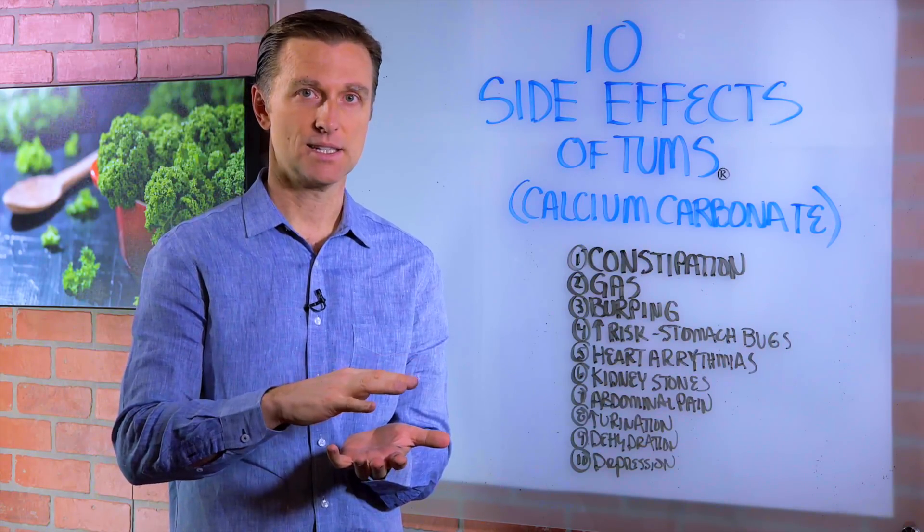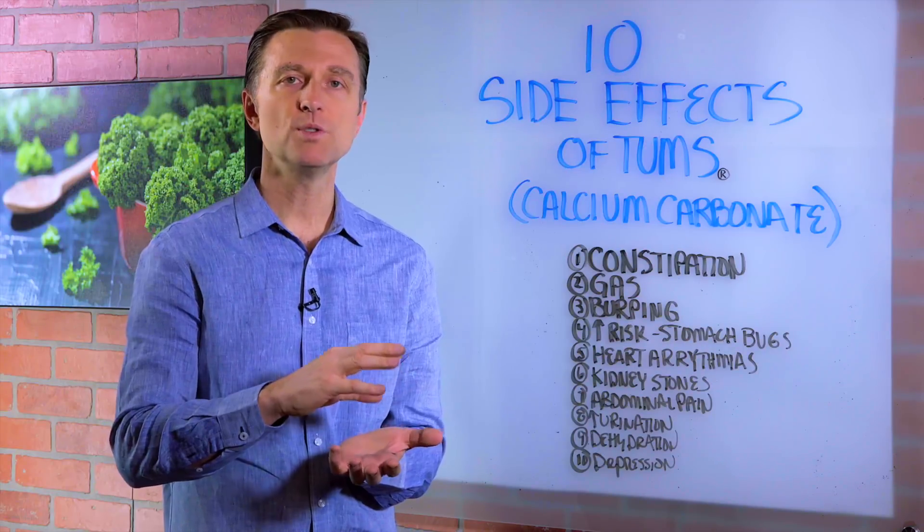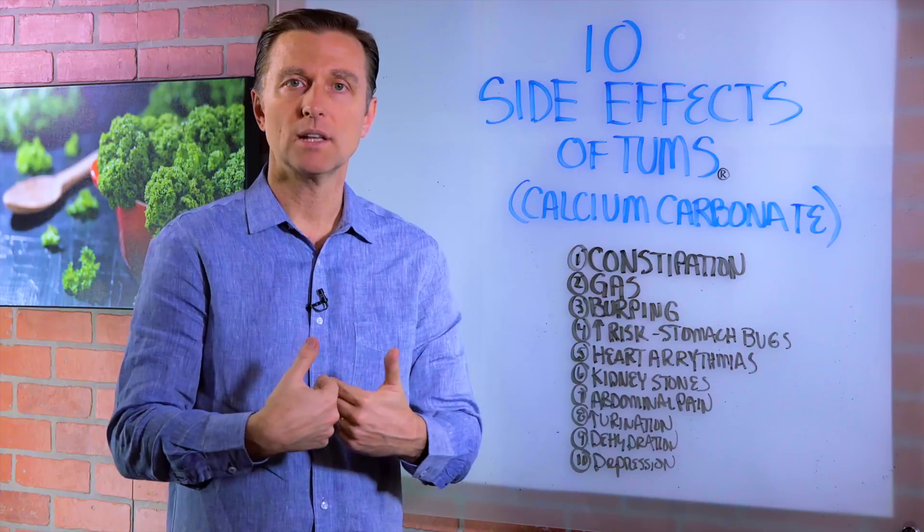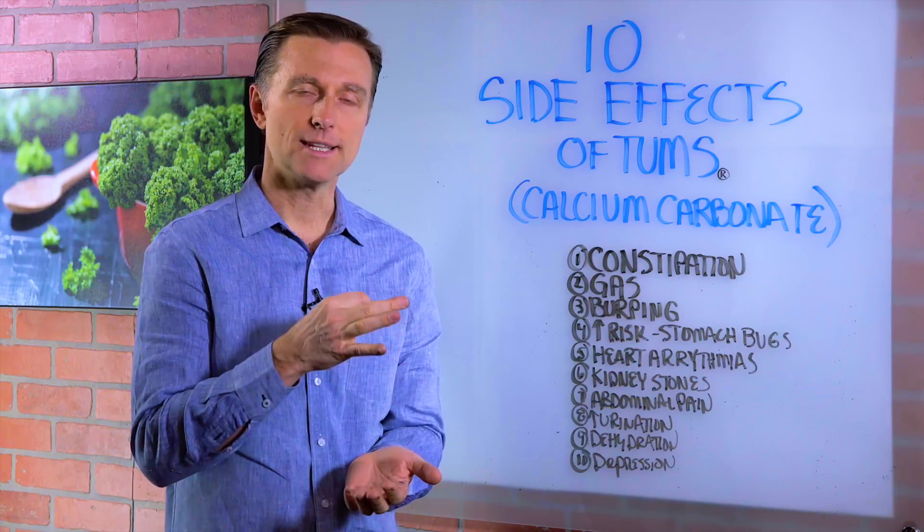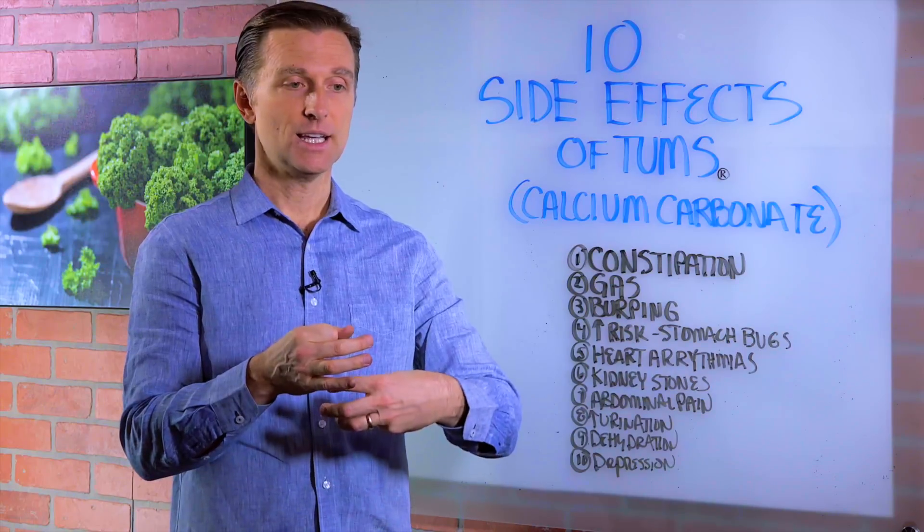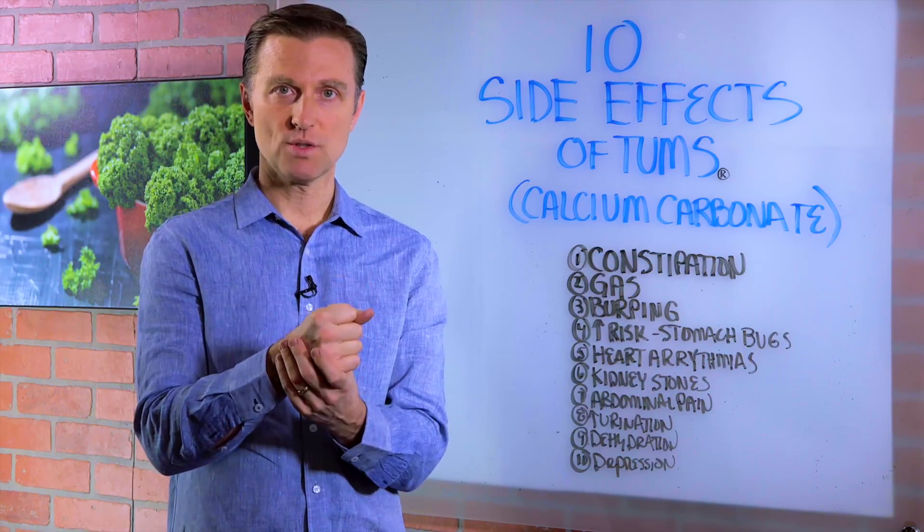When you lose the pH, which means the pH goes up and you become more alkaline in the stomach, the valve on the top of the stomach does not close all the way properly. It needs that strong acid to keep the valve closing.